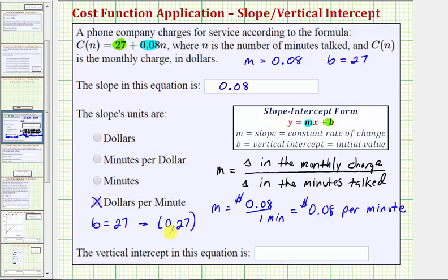This means if you talk zero minutes, the cost is still going to be 27 dollars, and that's why the vertical intercept is often referred to as the initial or starting value.